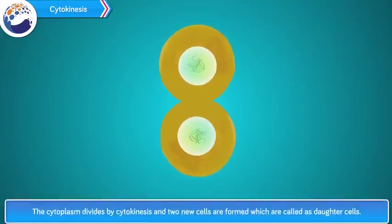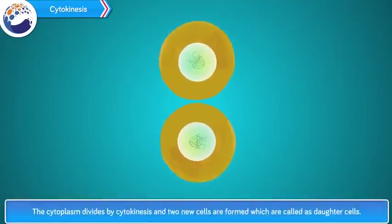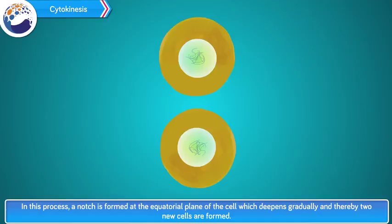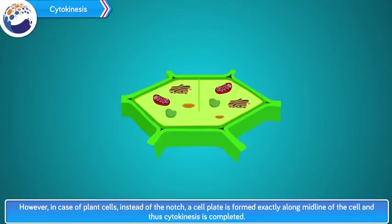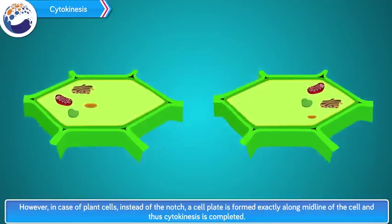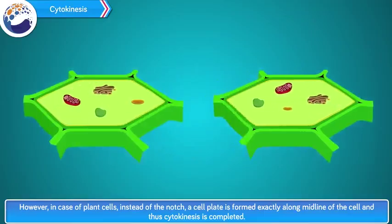Cytokinesis: the cytoplasm divides and two new cells called daughter cells are formed. In this process, a notch is formed at the equatorial plane of the cell which deepens gradually, forming two new cells. However, in the case of plant cells, instead of a notch, a cell plate is formed exactly along the midline of the cell and thus cytokinesis is completed.